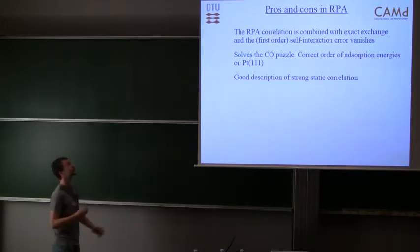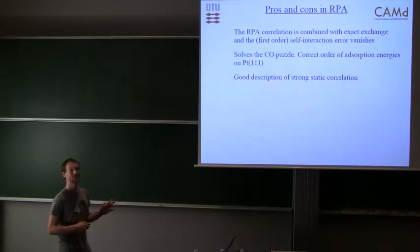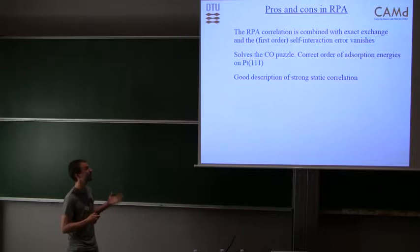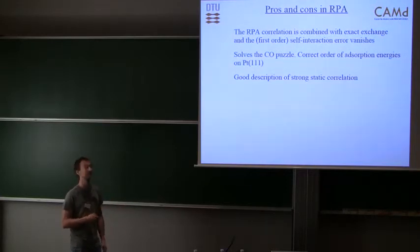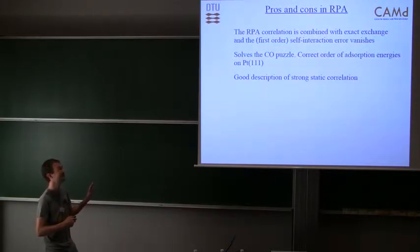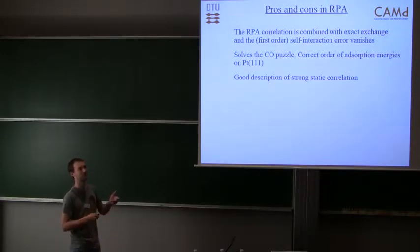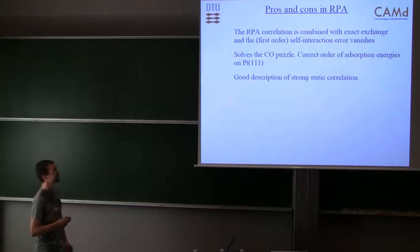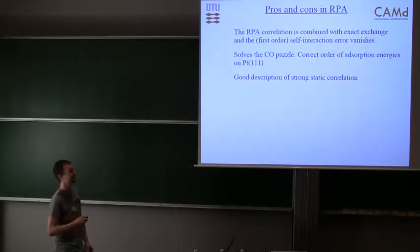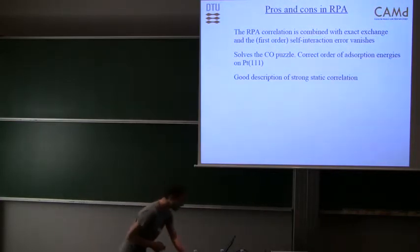To sum up about pros and cons of RPA: it's very good that we get a very good description of van der Waals interactions, we have this natural non-locality. It's natural to combine it with exact exchange, so we don't have the self-interaction problem, and we don't have to worry about the exchange at all because it's just exact. It's also been shown that it solves the CO puzzle. All semi-local functionals tend to give the wrong order of adsorption of CO on Platinum 111, but RPA corrects this and gives the right adsorption site. It also gives a very good description of strong static correlation. For example, if you dissociate a hydrogen molecule, then all semi-local functionals will fail in the dissociation limit, but RPA will produce the right dissociation limit.